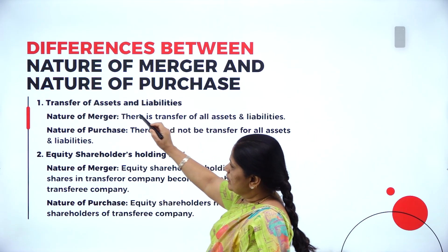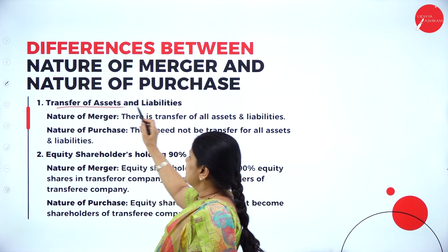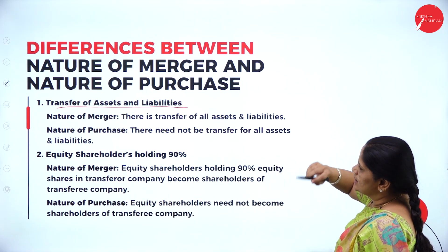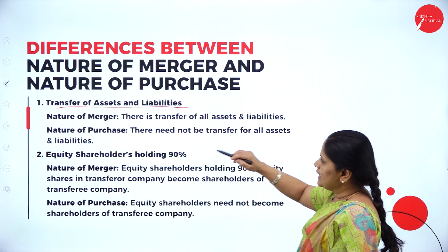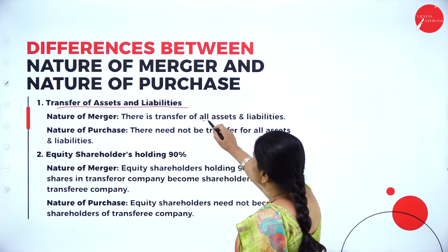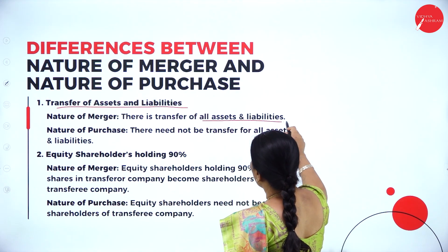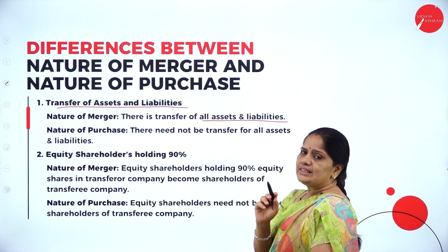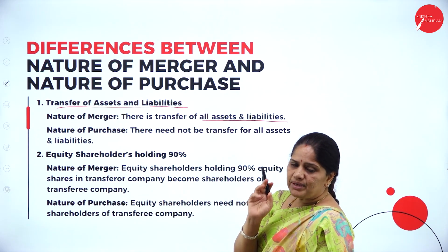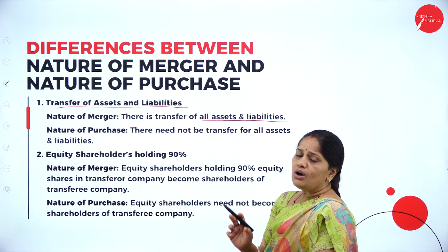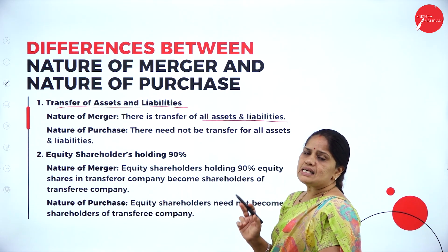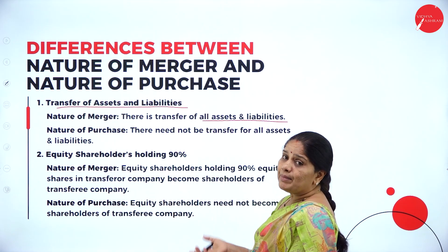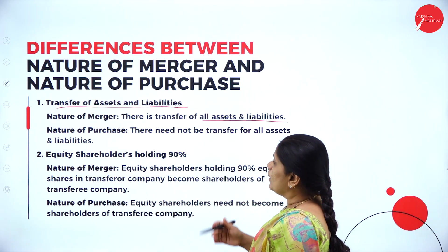The first difference is relating to the transfer of assets and liabilities. In the nature of merger, there is transfer of all assets and liabilities. When there is amalgamation in the nature of merger, all the assets and liabilities of both the companies will be merged together.